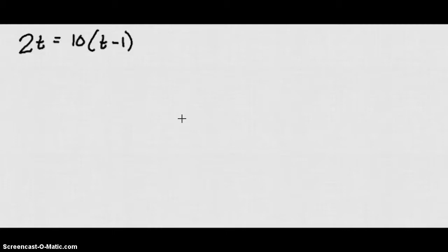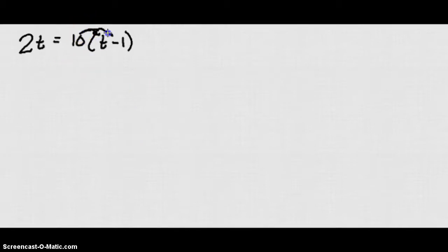In this case we have 2t equals 10 times the quantity in parentheses t minus 1. In order to simplify this we'll distribute the 10. We get 2t equals 10t minus 10.